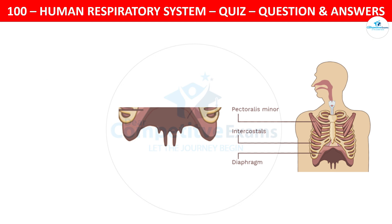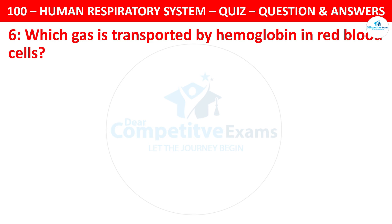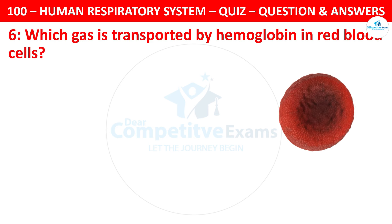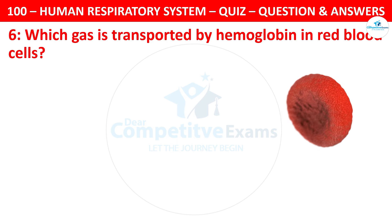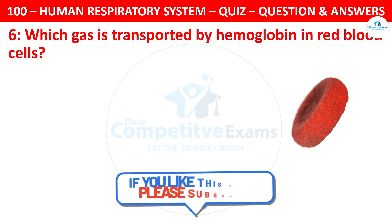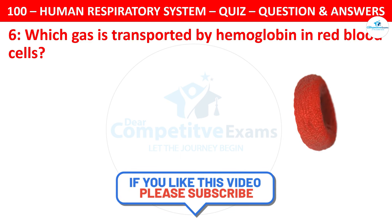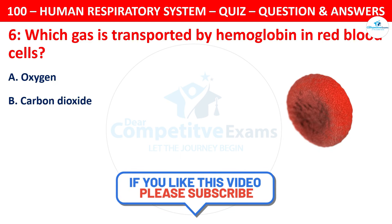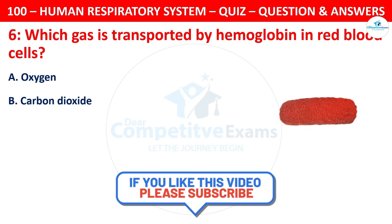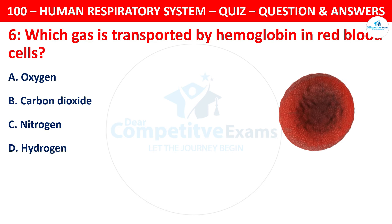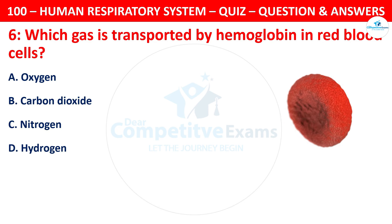Question 6. Which gas is transported by hemoglobin in red blood cells? Your options are: oxygen, carbon dioxide, nitrogen, or hydrogen?